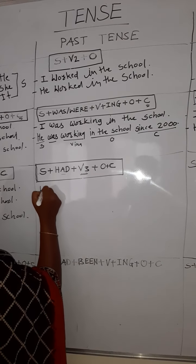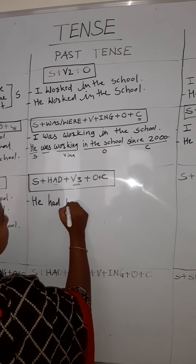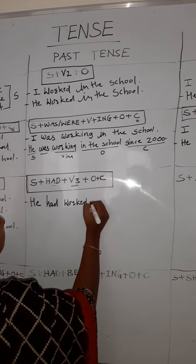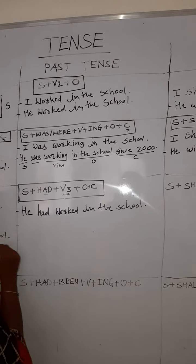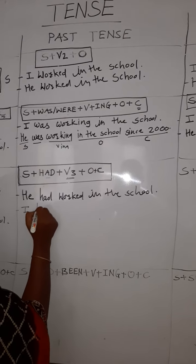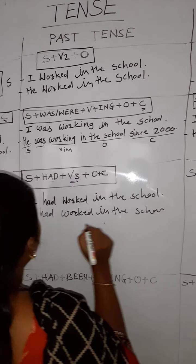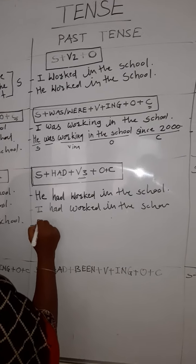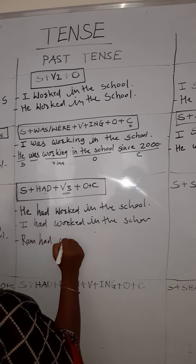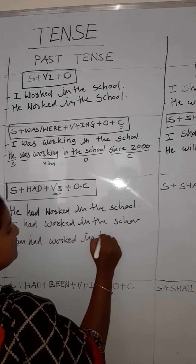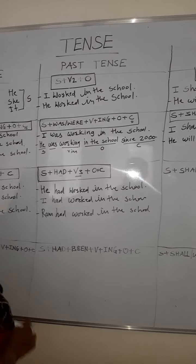Our first sentence: 'He had worked in the school since 2000.' Also: 'I had worked in the school.' Suppose Ram is there — he is a third person like 'he' — so: 'Ram had worked.' No change. To all pronouns we can use 'had.'